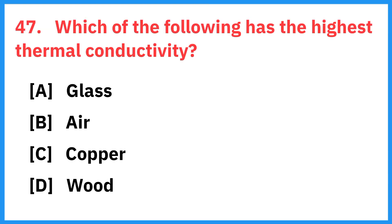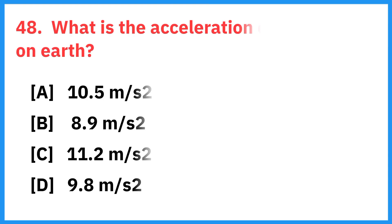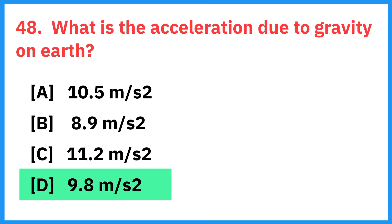Which of the following has the highest thermal conductivity? Right answer is copper. What is the acceleration due to gravity on Earth? Right answer is 9.8 meters per second squared.